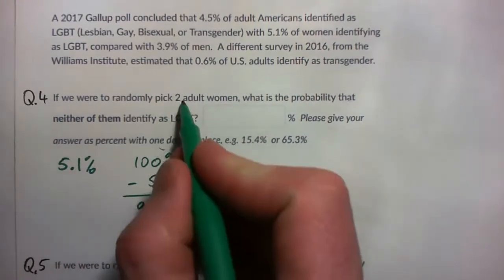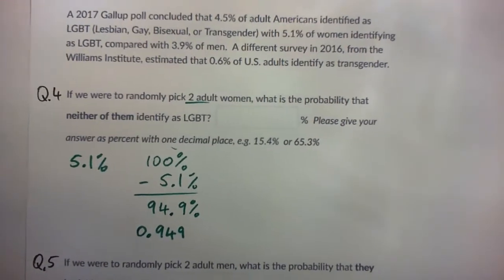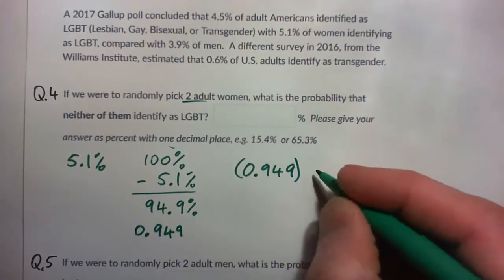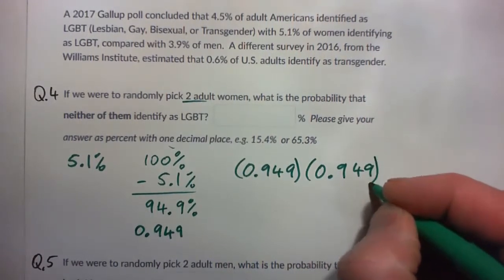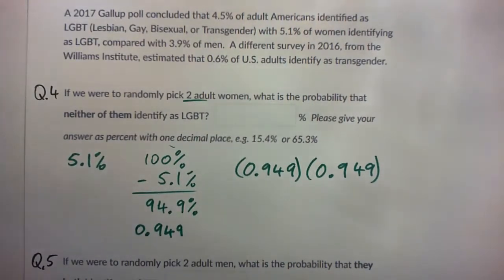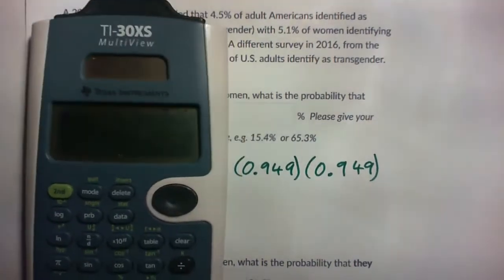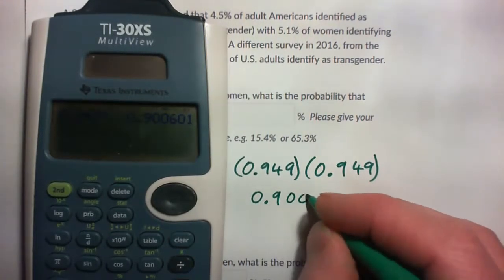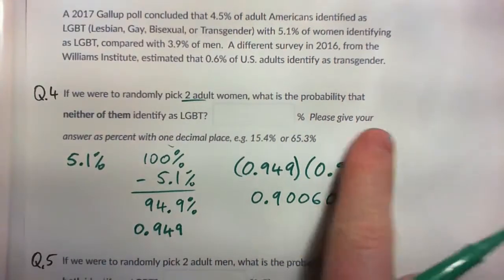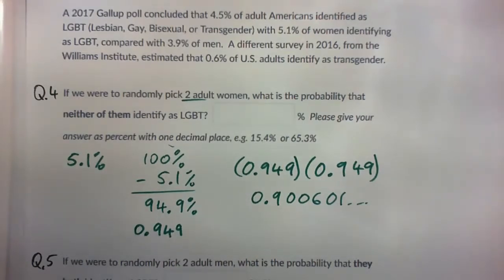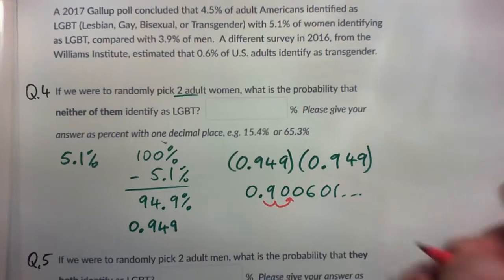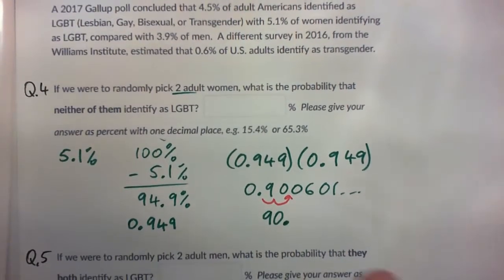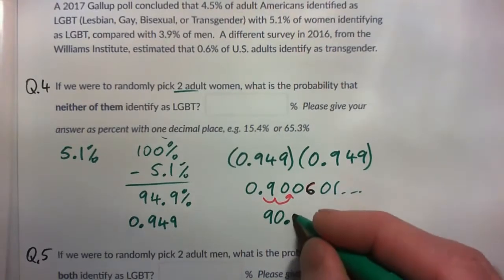Now, if you randomly pick two adult women, what's the probability neither of them identify? That means the first one doesn't, and the second one doesn't as well. Those are two independent events, one after the other, so you multiply them out — or you could square that same value. So 0.949 squared gives us 0.9006. As a percent with one decimal place, we move the decimal point over to get 90. We round up because of the 6, so the answer is 90.1%.